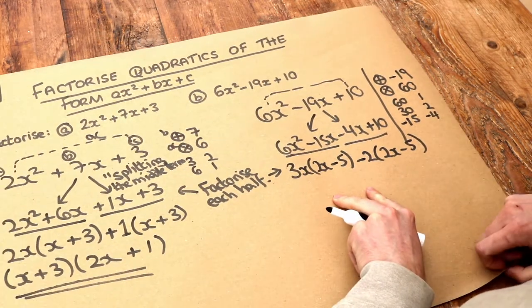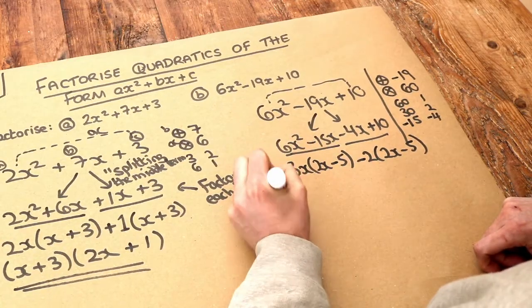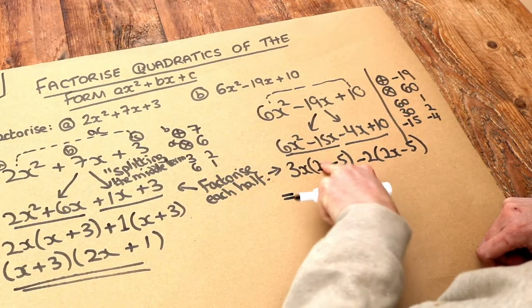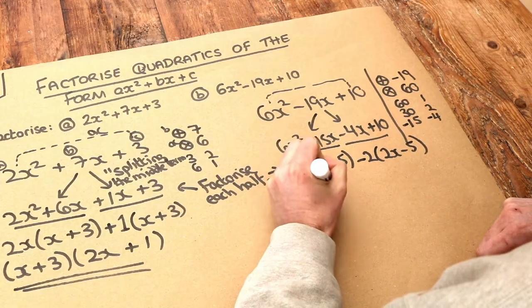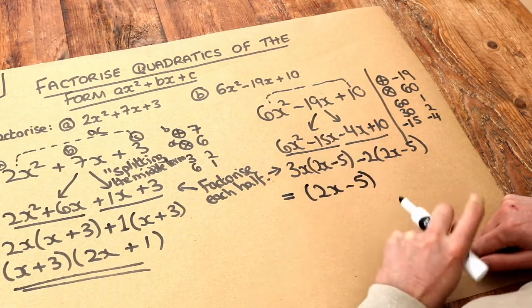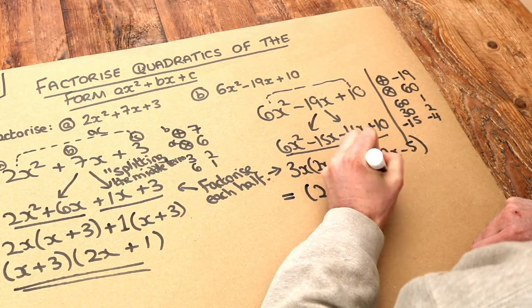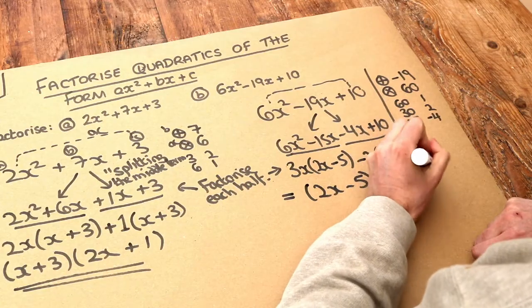And then the very final step, if you want to do it the quick way this time, remember this is one of the brackets, so 2x minus 5, and the other bracket is just everything outside of it, so the 3x and the minus 2. And that is the final answer.